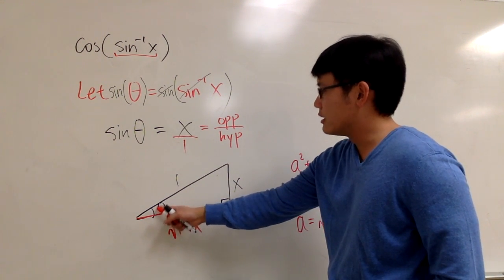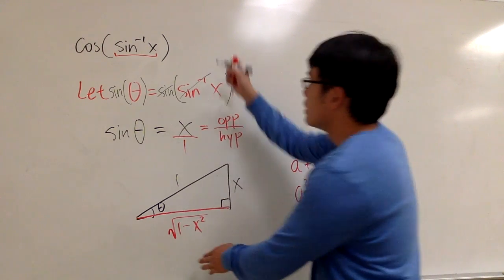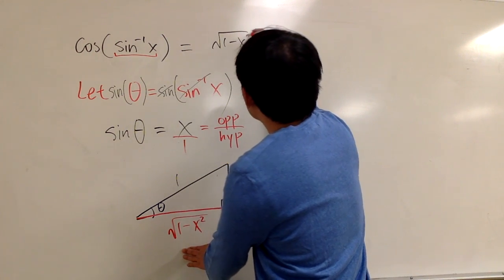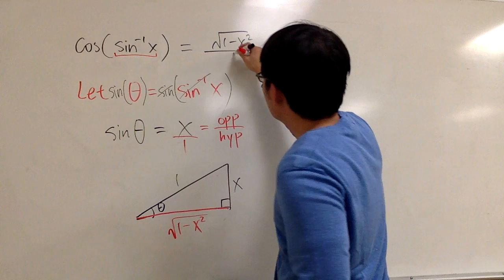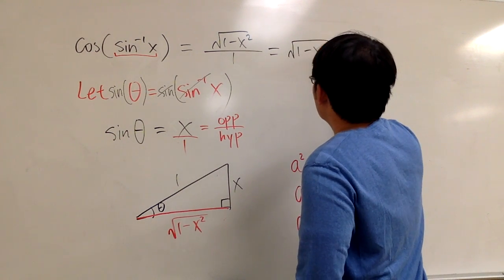Cosine is the adjacent, which is square root of 1 minus x squared. Square root of 1 minus x squared over the hypotenuse, which is equal to 1. And of course, we never need to write down 1.